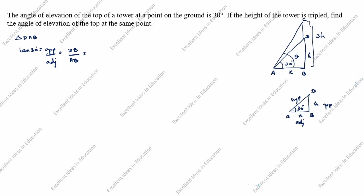The opposite side DB has value h, and the adjacent side AB has value x. So tan 30° equals 1 over √3, which equals h over x. Cross-multiplying, x is equal to h√3.